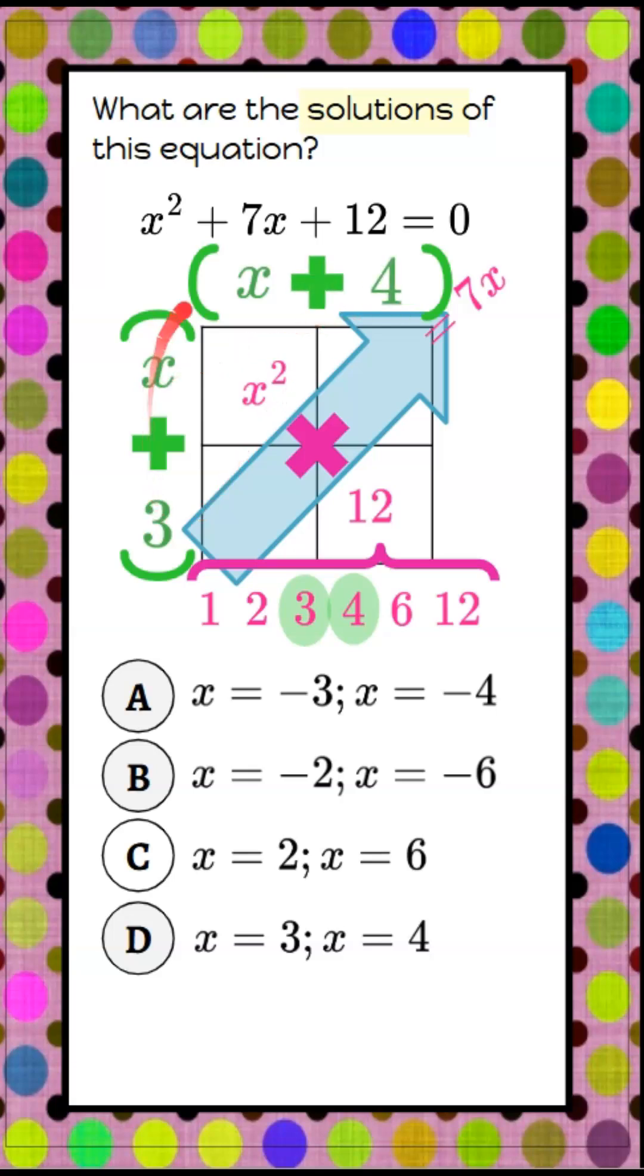So x plus 3 multiplied by x plus 4 will equal this. We're going to check it by saying 3 times x is 3x, x times 4 is 4x, 3x add 4x is 7x, and then 3 times 4 is 12.